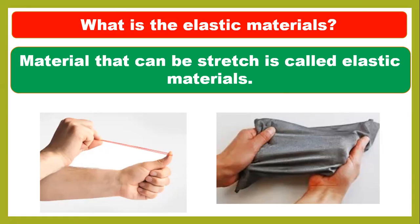The rubber band can be stretched, so it is an elastic material. The cloth can be stretched by your hands easily, so it is also an elastic or flexible material.